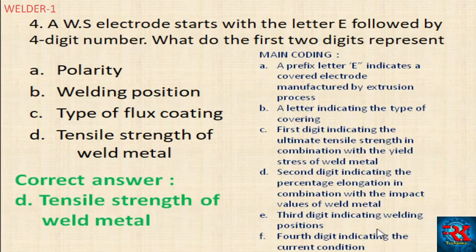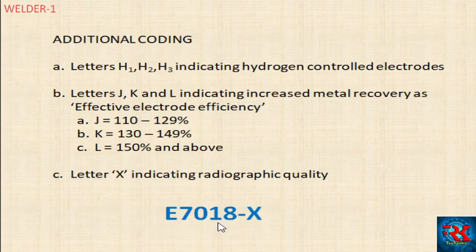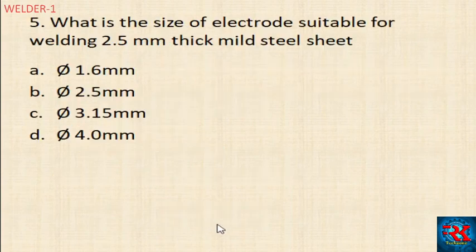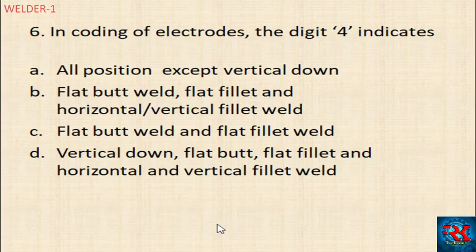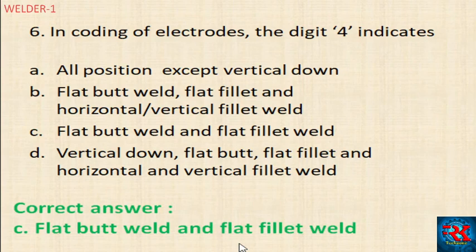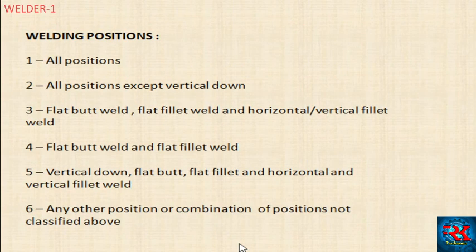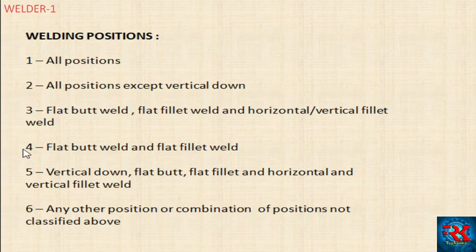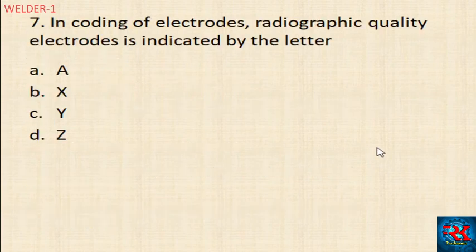The third digit indicates welding positions. For example, E7018 — digit 4 indicates flat butt weld and flat fillet weld. Digit 1 indicates all positions. The encoding of electrodes in radiography quality is indicated by the letter X.